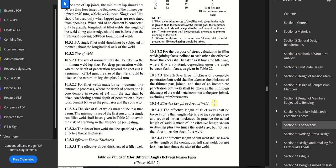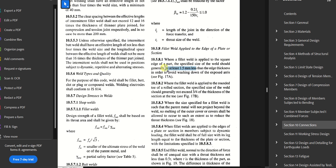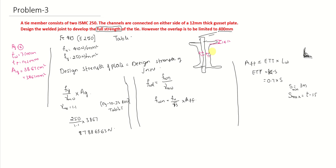Page number 79, clause 10.5.8.1 says where the fillet weld is applied to the square edge of the part, the specified size of the weld should generally be at least 1.5mm less than the edge thickness. Edge thickness is 7.1 minus 1.5, which gives us 5.6mm. The minimum size should be 3, maximum size should be 5.6. Let us assume the size of weld in between, some 4mm.